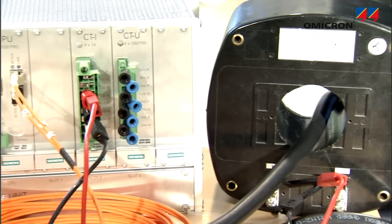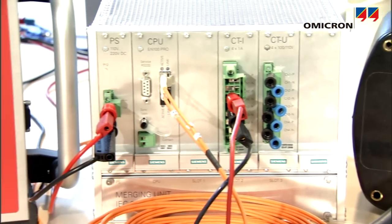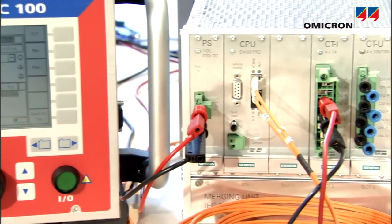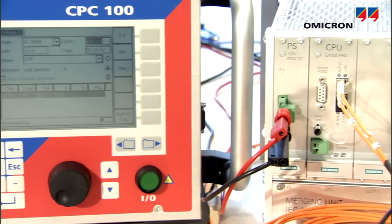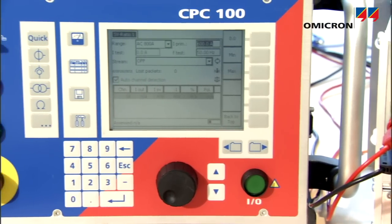The CPC-100 injects a test signal with a characteristic waveform into the instrument transformer that needs to be tested, thus helping to identify its stream of sampled values.